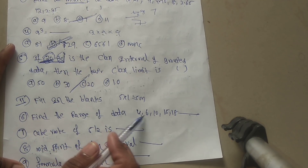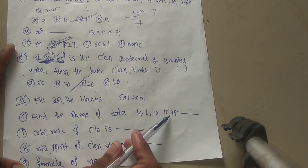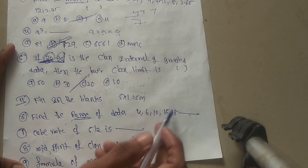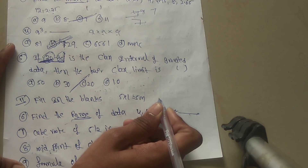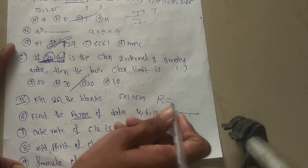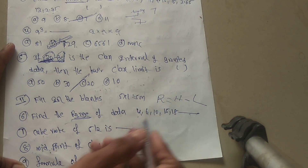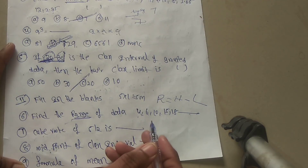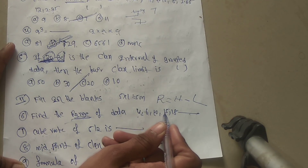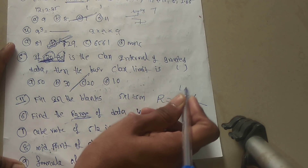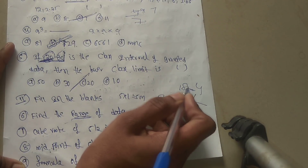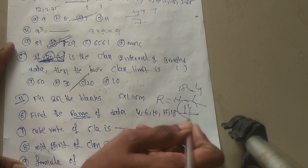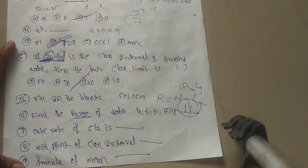Question 6: find the range of the data: 4, 6, 10, 15, 18. To find the range, subtract the lowest number from the highest number. The highest value is 18 and the lowest is 4, so 18 minus 4 equals 14. Range is nothing but highest value minus lowest value — the answer is 14.